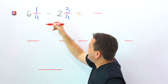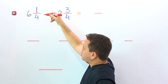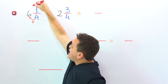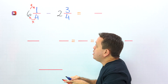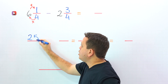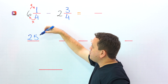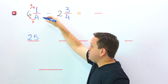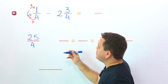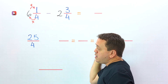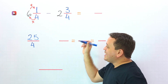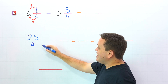Let's start with 6 and one-fourth. To convert this mixed number to an improper fraction, first we multiply the denominator by the whole number, and then we add this result to the numerator. 4 times 6 is 24, plus 1 gives us 25, and we keep the denominator the same — 4. So 6 and one-fourth equals 25 fourths, which is an improper fraction, given that the numerator 25 is greater than the denominator 4.